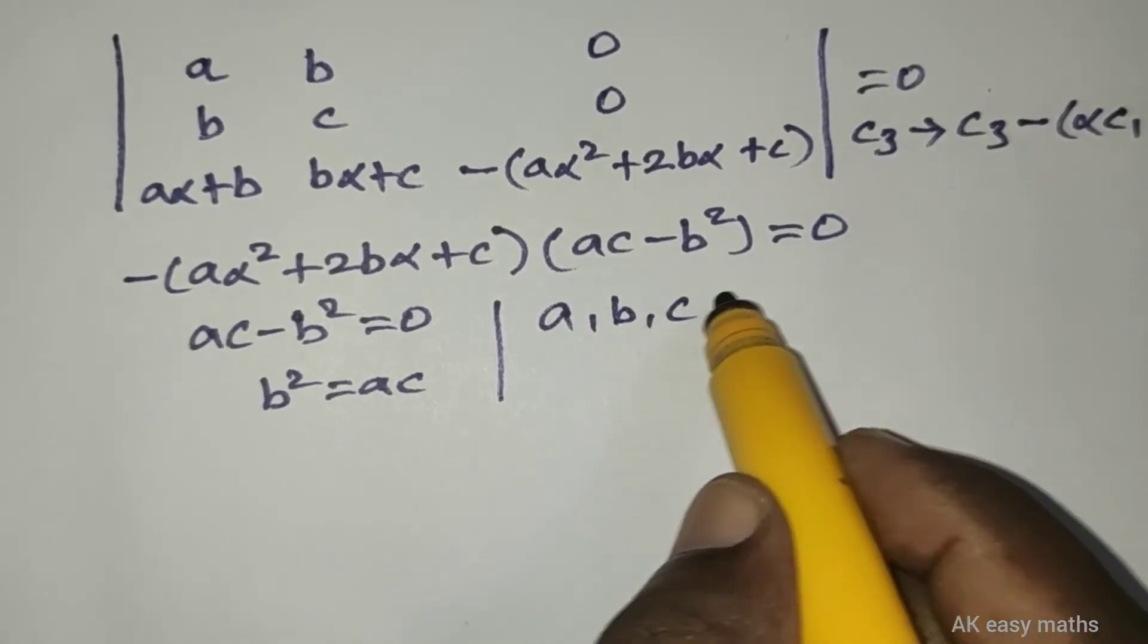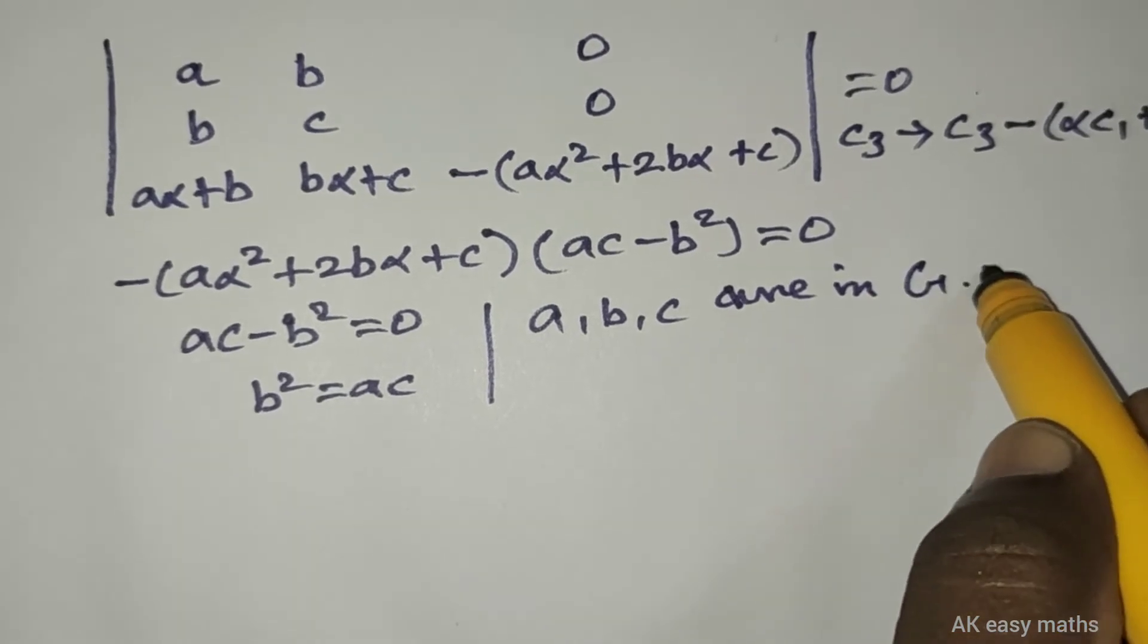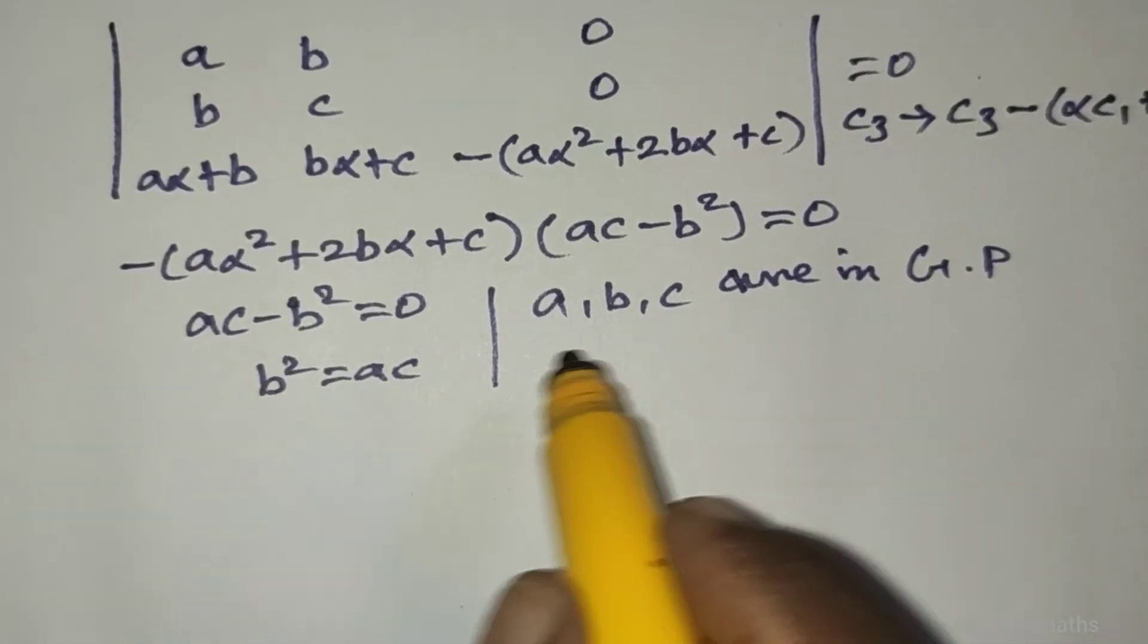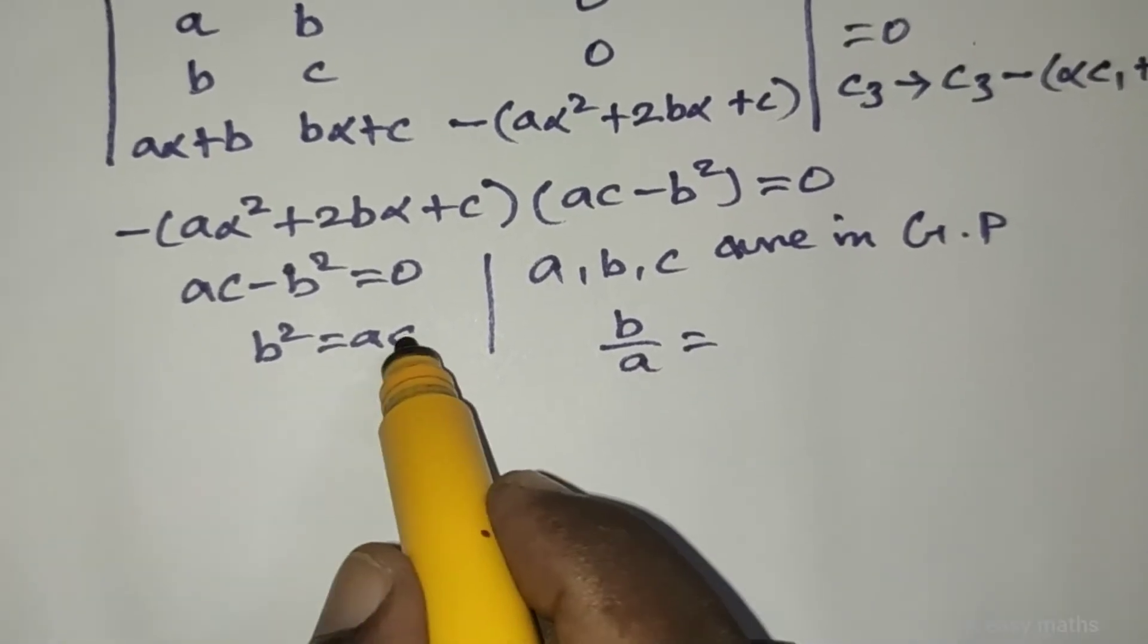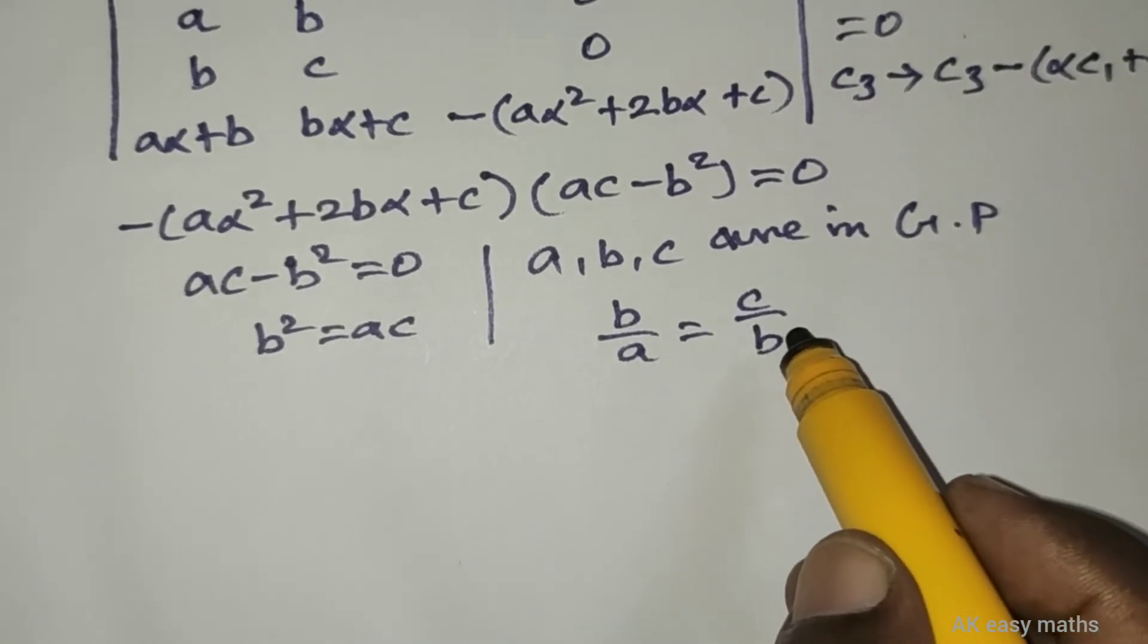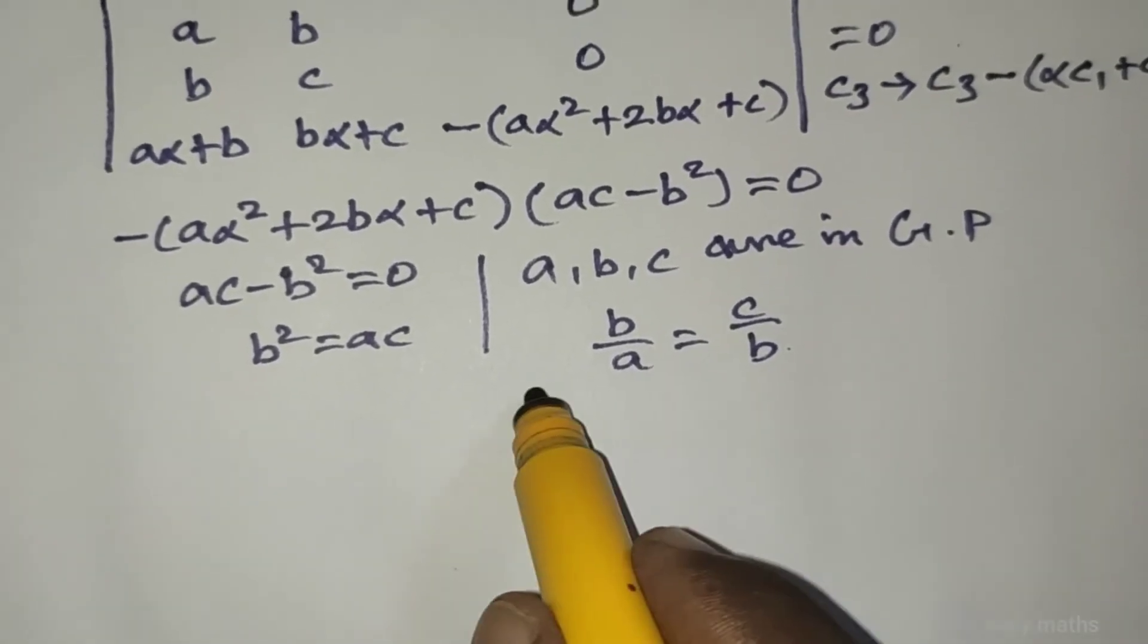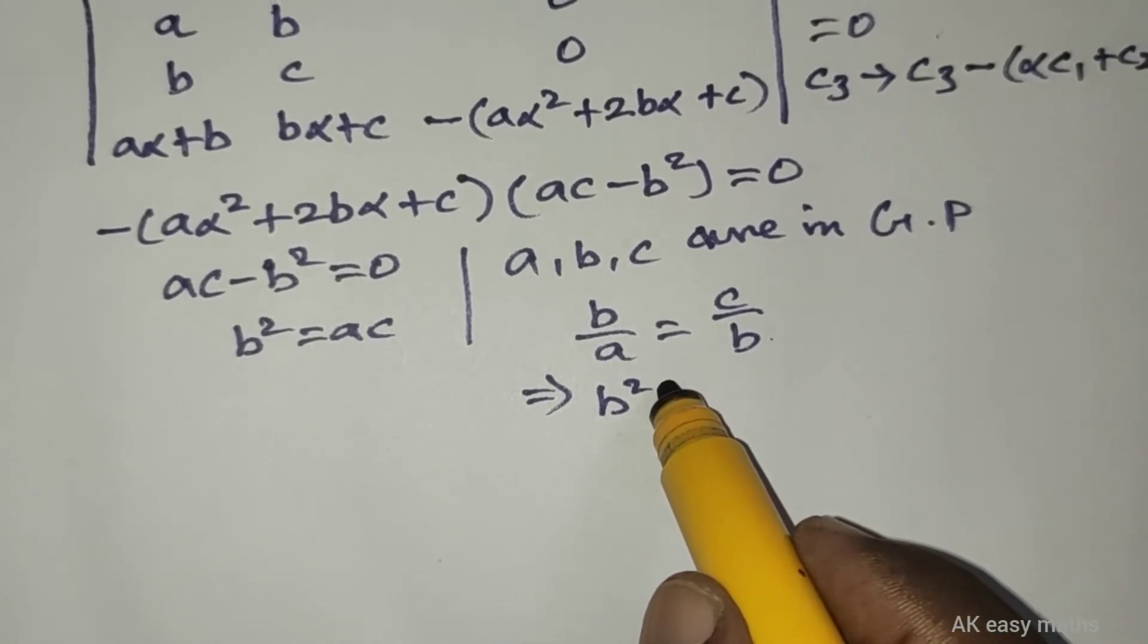a, b, c are in GP. By cross multiplication, b by a equals c by b. This means b squared equals ac, proving a, b, c are in GP.